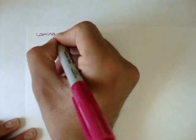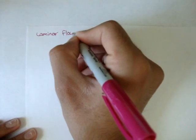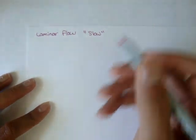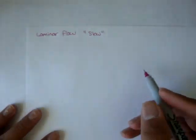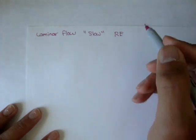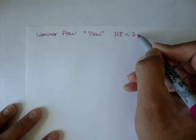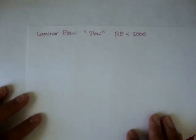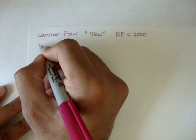Let's talk about turbulent flow. We've been learning laminar flow — as a reminder, laminar flow is just slow flow, slow-moving liquid, or a liquid with a Reynolds number less than 2,000. For the rest of the video and the rest of the lessons, we're going to be talking about turbulent flow.